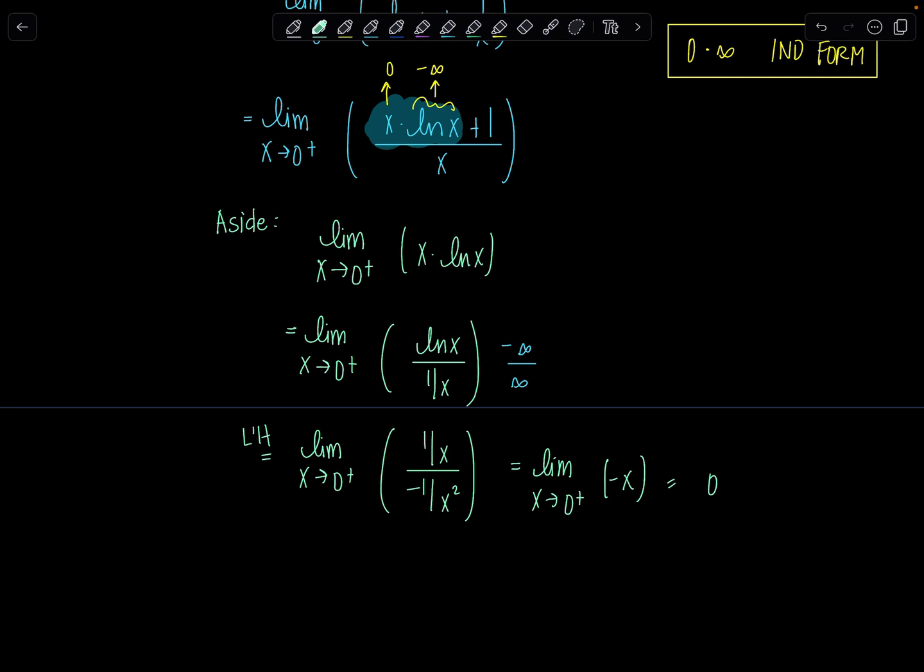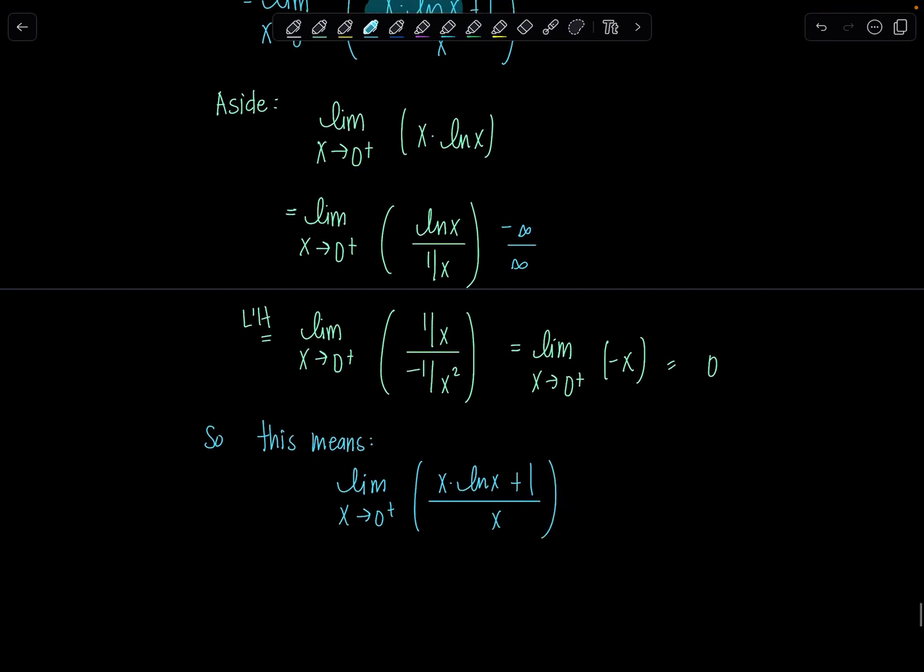So what does that tell me? So this means the limit as x goes to 0 from the right of x times ln of x plus 1 over x. Well, I just showed this term here goes to 0. So we have 0 plus 1. We have a positive constant over the denominator, which is approaching 0 through positive values. That tells me, this entire expression is going to positive infinity. Whew! I know. I know.